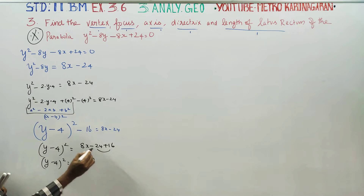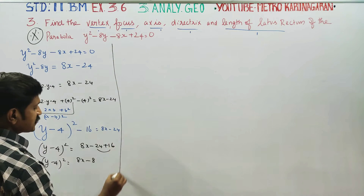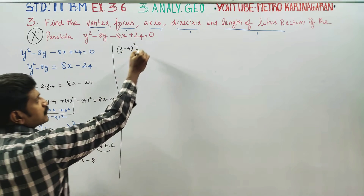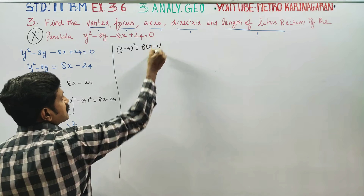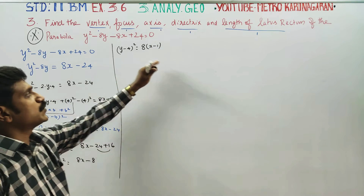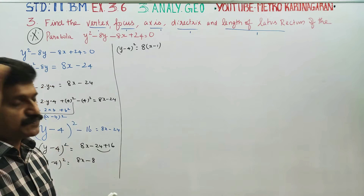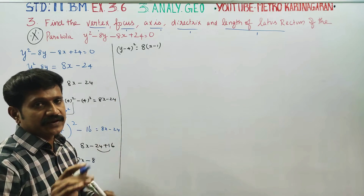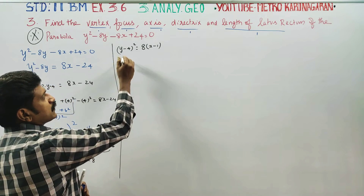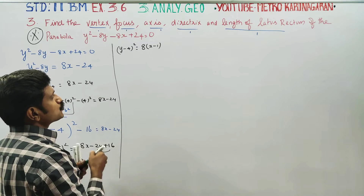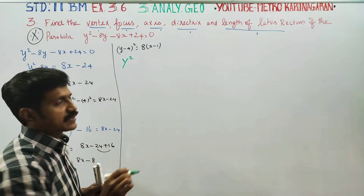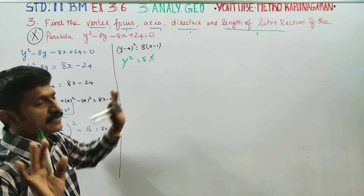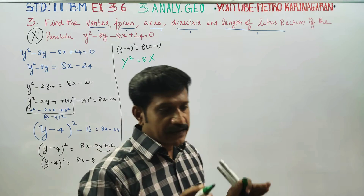Y minus 4 whole square is equal to 8x minus 8. Final stage: (y minus 4) whole square is equal to 8 times (x minus 1).